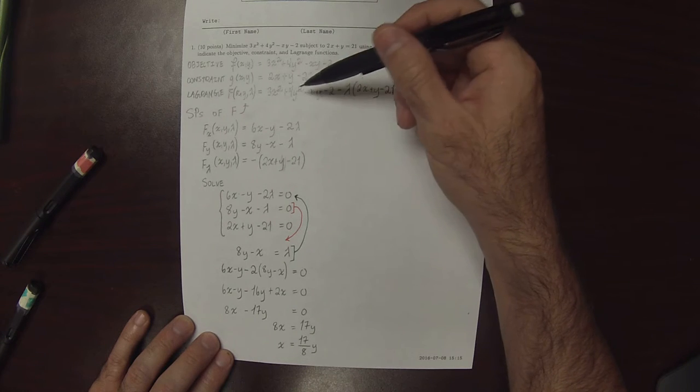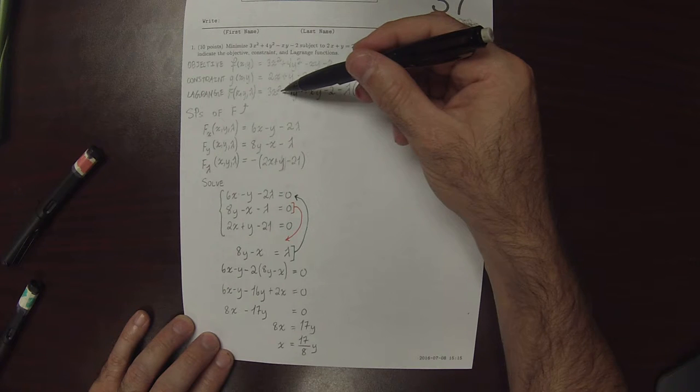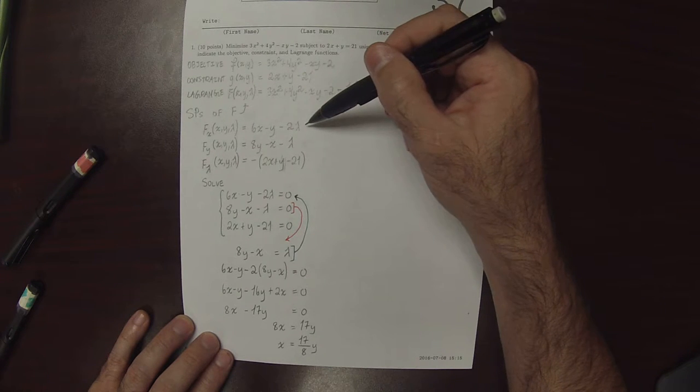And then here the x partial, 6x minus y minus 2 lambda.